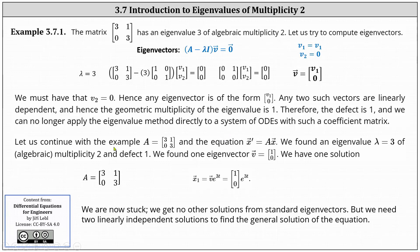Let us continue with matrix A having entries 3, 1, 0, 3 and the equation X prime equals AX. We found eigenvalue lambda equals 3 of algebraic multiplicity 2 with defect 1. We can find one eigenvector (1, 0) by letting V1 equal 1, giving us one solution: X1 equals the eigenvector (1, 0) times e to the 3t. But now we are stuck — we can get no other solutions from standard eigenvectors, yet we need two linearly independent solutions for the general solution.